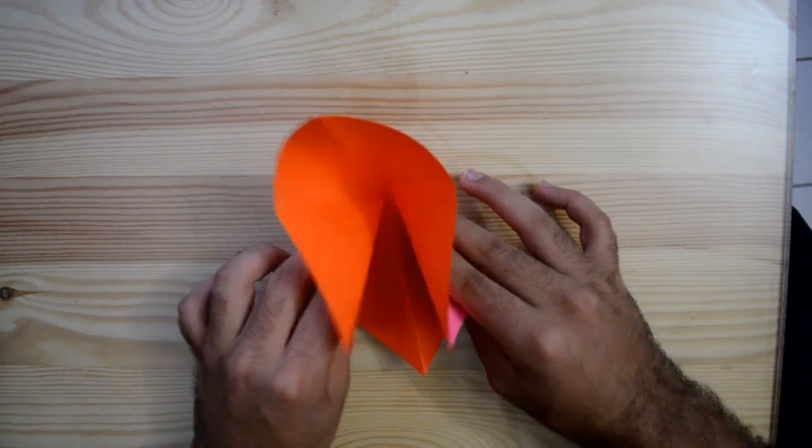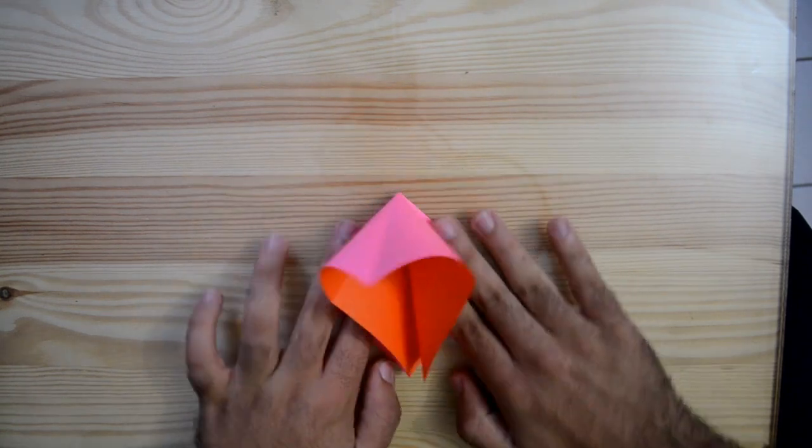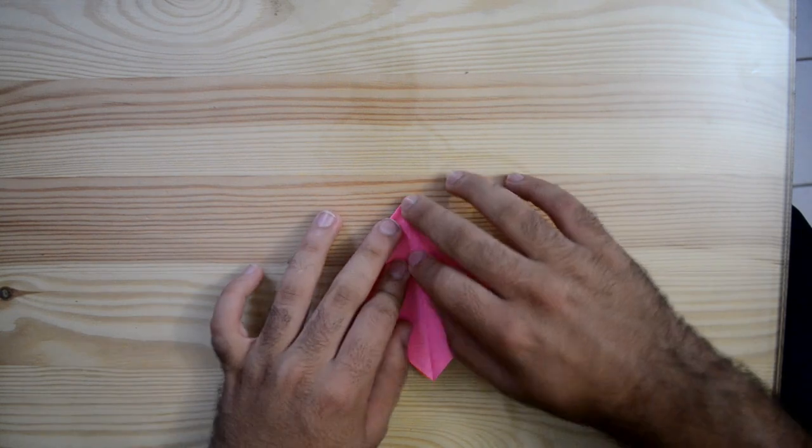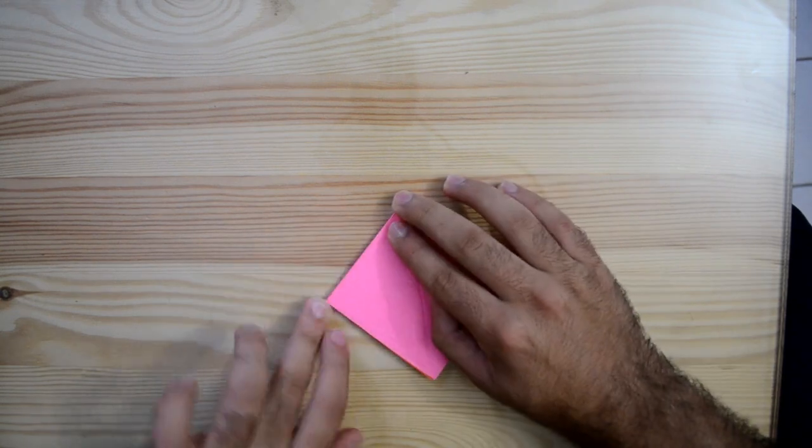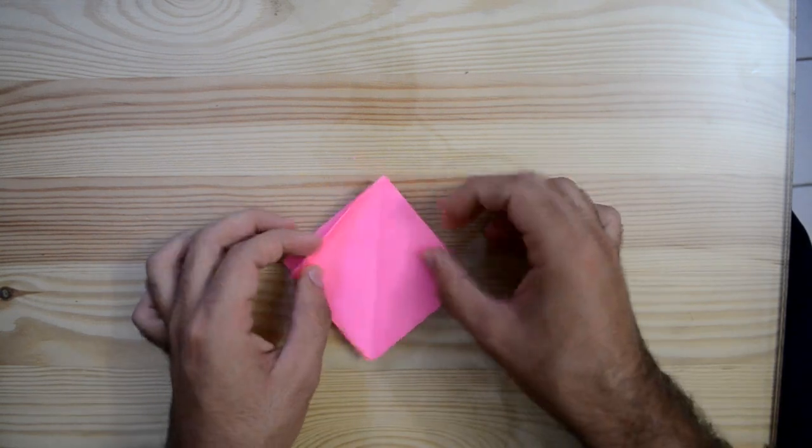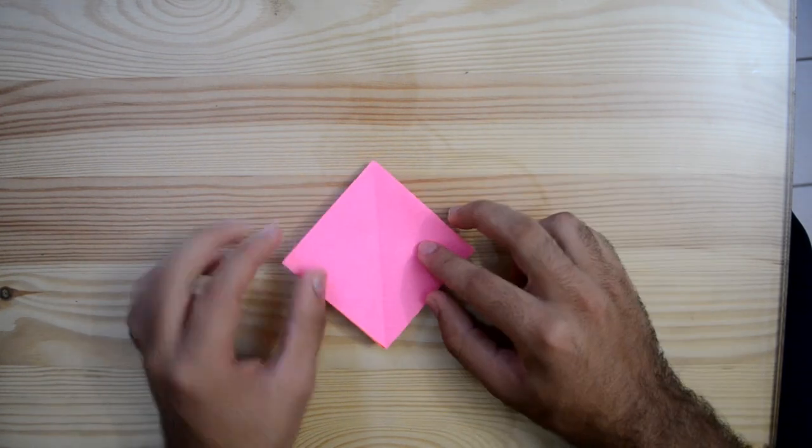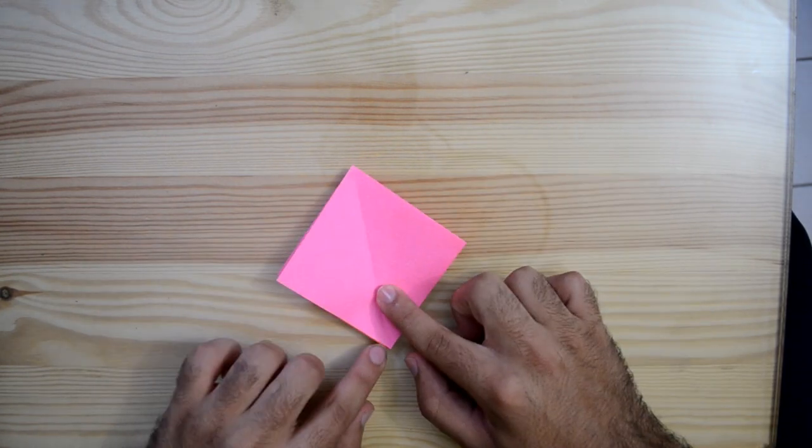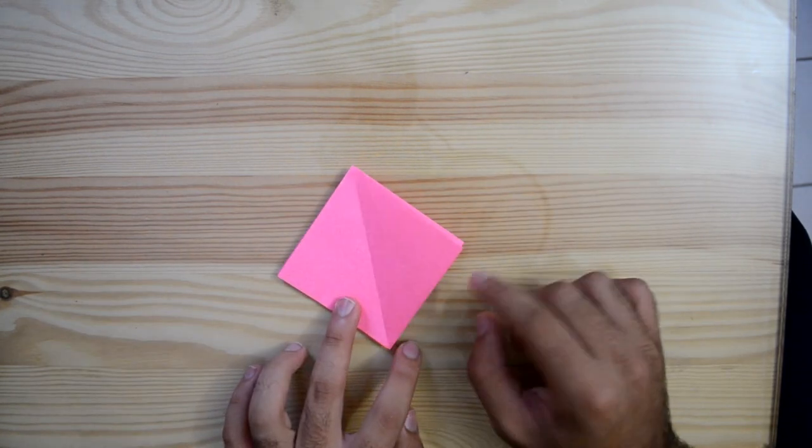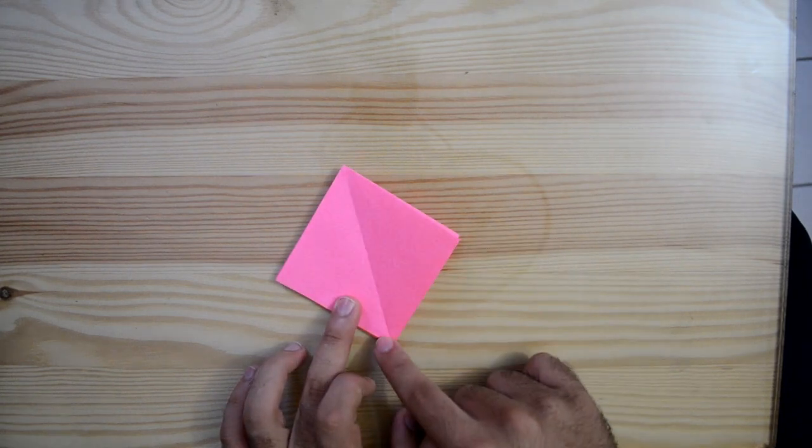Then flatten the paper, and that's how you make the base of the crane. Now we're going to take this line and this one here, and I'm going to fold both of them on the center line.